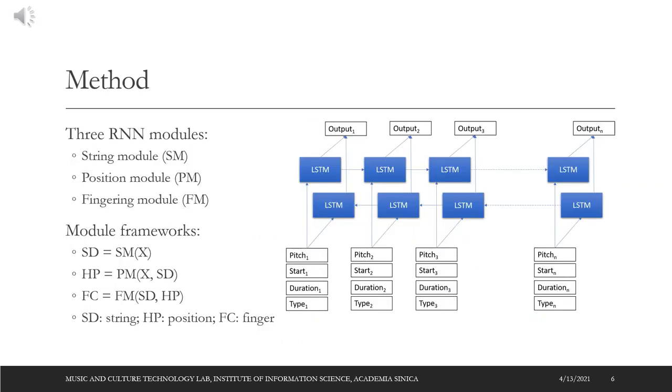We use bi-directional long short-term memory networks which take a note sequence and output probabilities for strings and hand positions. The string module outputs a sequence of string designations. Based on the predicted string, the position module outputs a sequence of hand positions. Thereon, the finger module generates a sequence of finger choices based on the outputs of the string and the position modules.